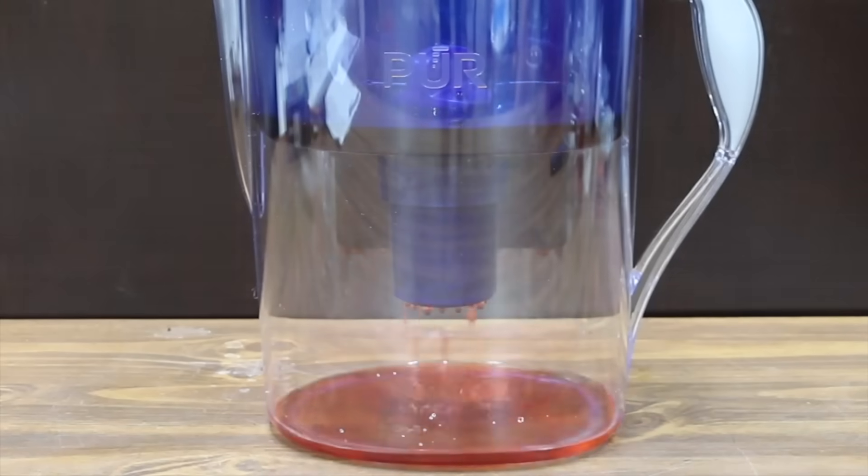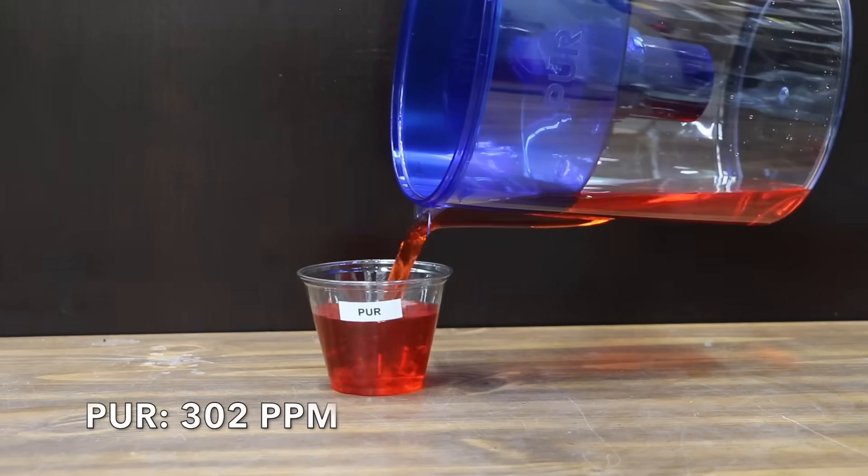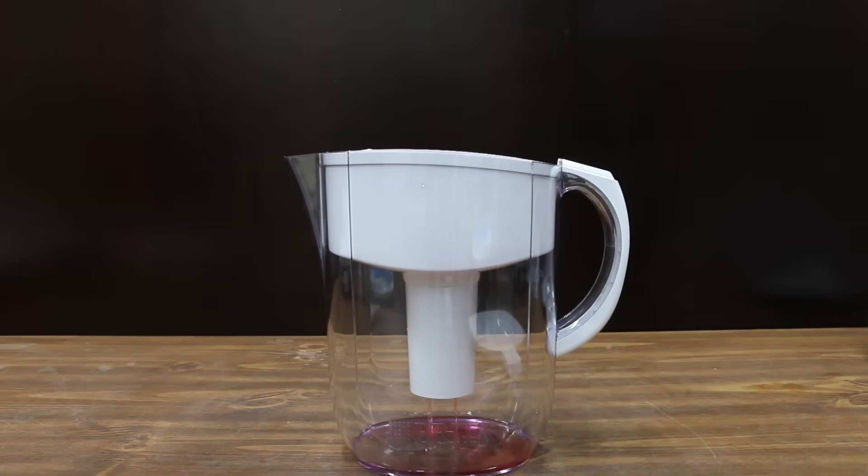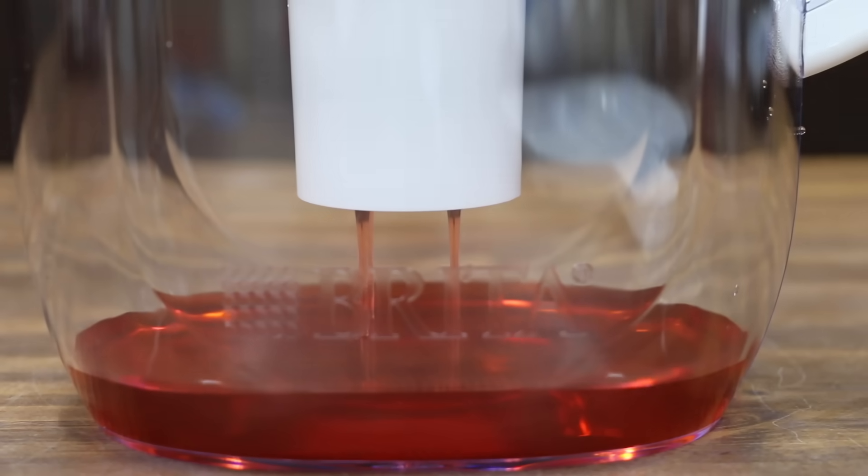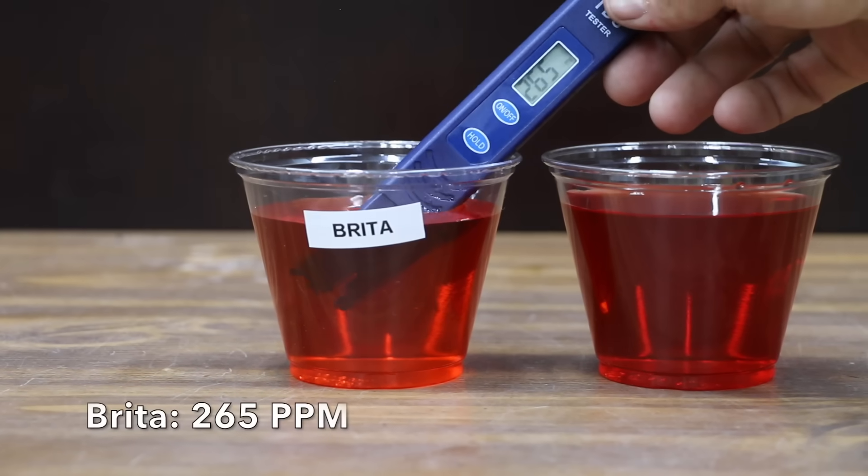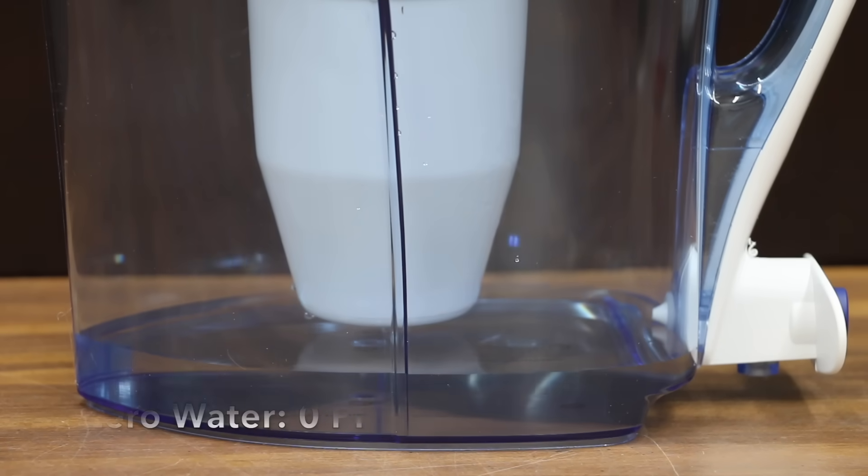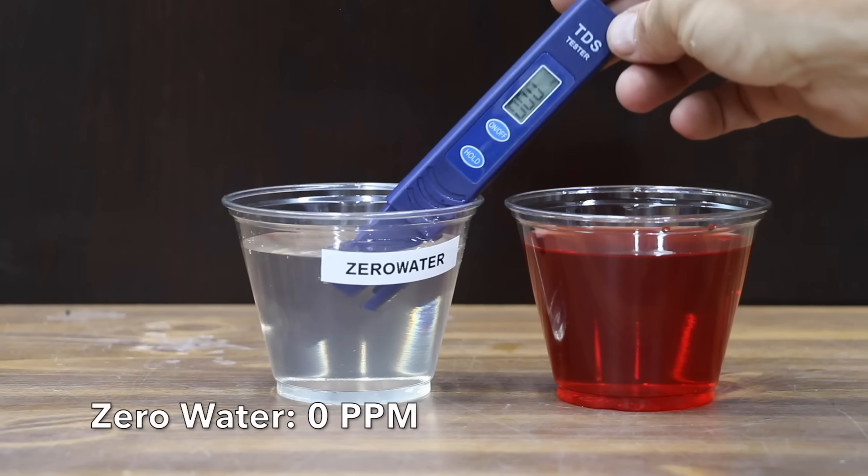The water still looks pretty bright red even after it's been filtered by the Pure brand. 302 parts per million. The appearance of the Brita looks about the same as the Pure brand. However, the Brita did a little bit better at removing dissolved solids at 265 parts per million. And the Zero Water did by far the best job yet at improving the appearance of the water. Zero parts per million.